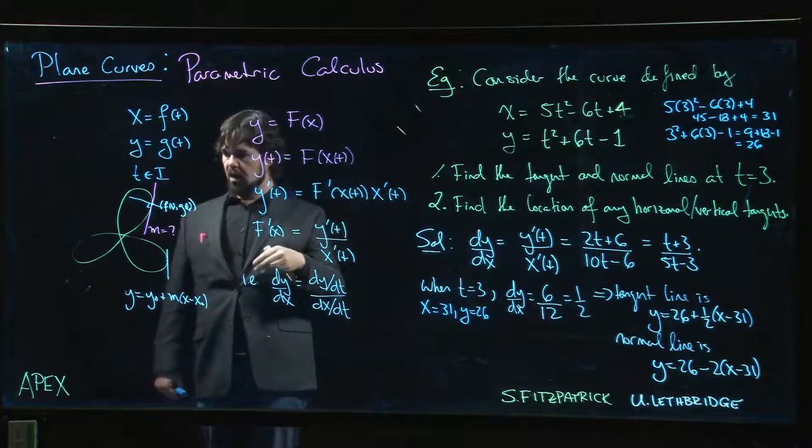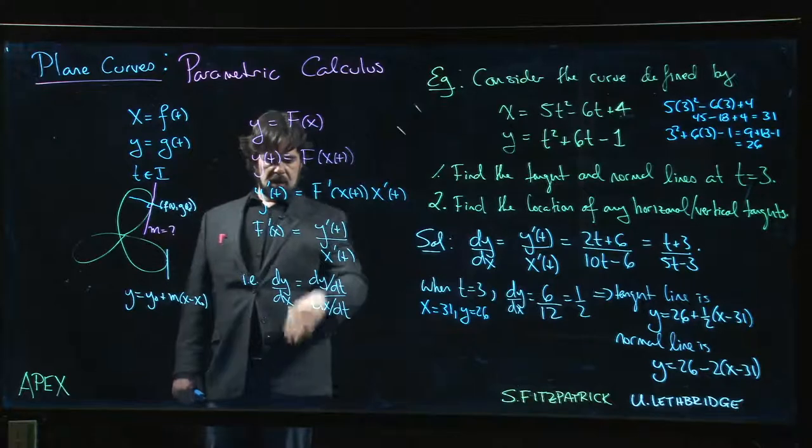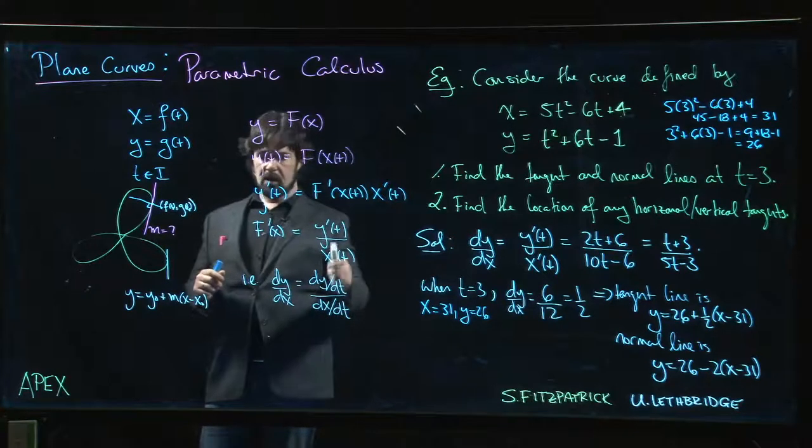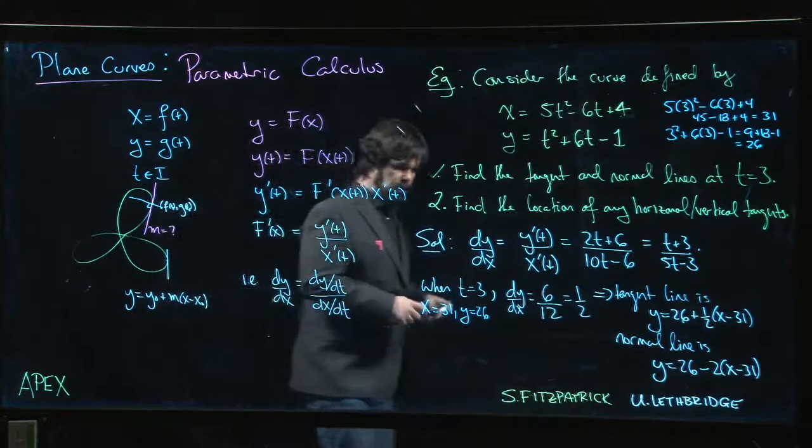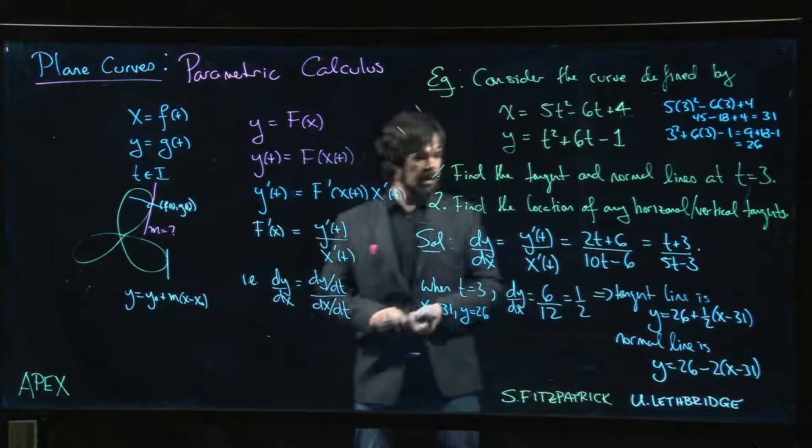The vertical tangents happen when dy/dx goes to infinity, which basically is when x prime is equal to 0. Okay, so horizontal tangent...